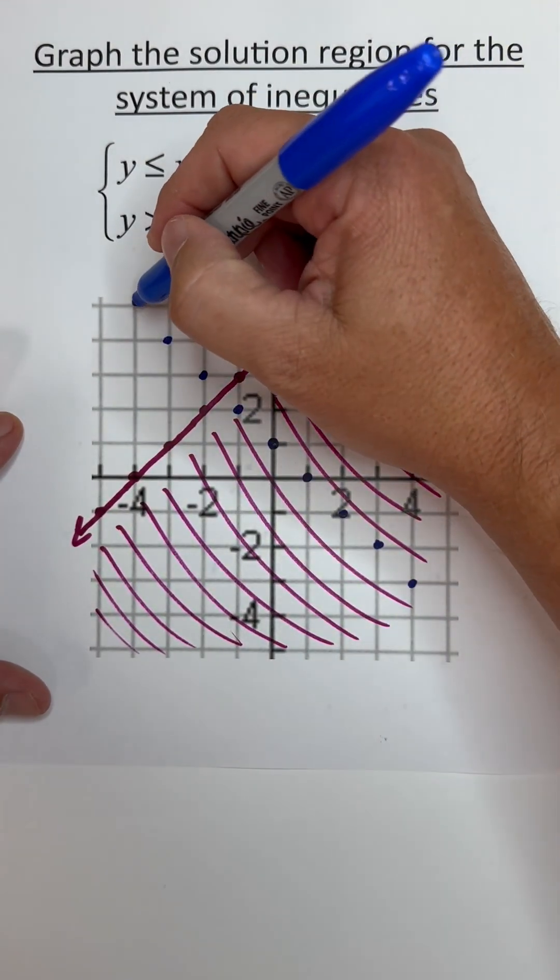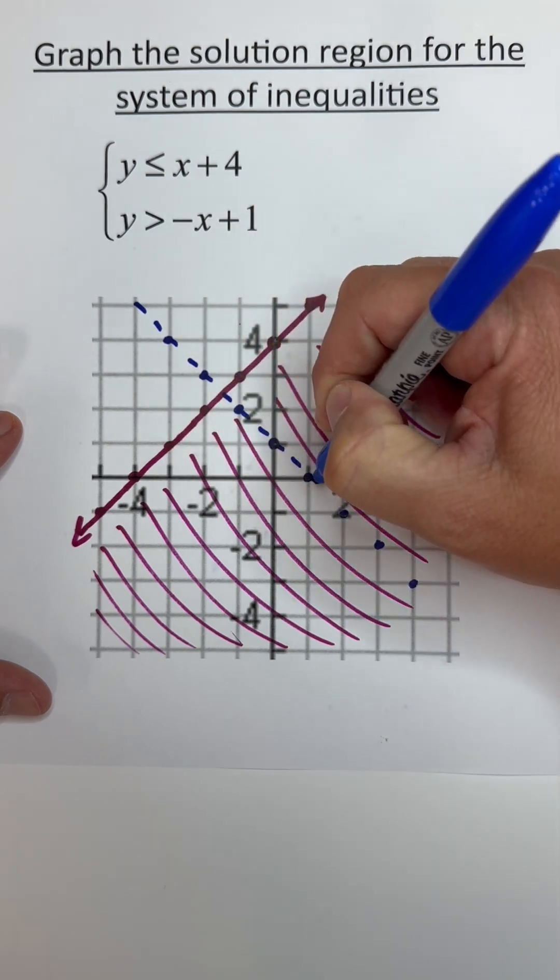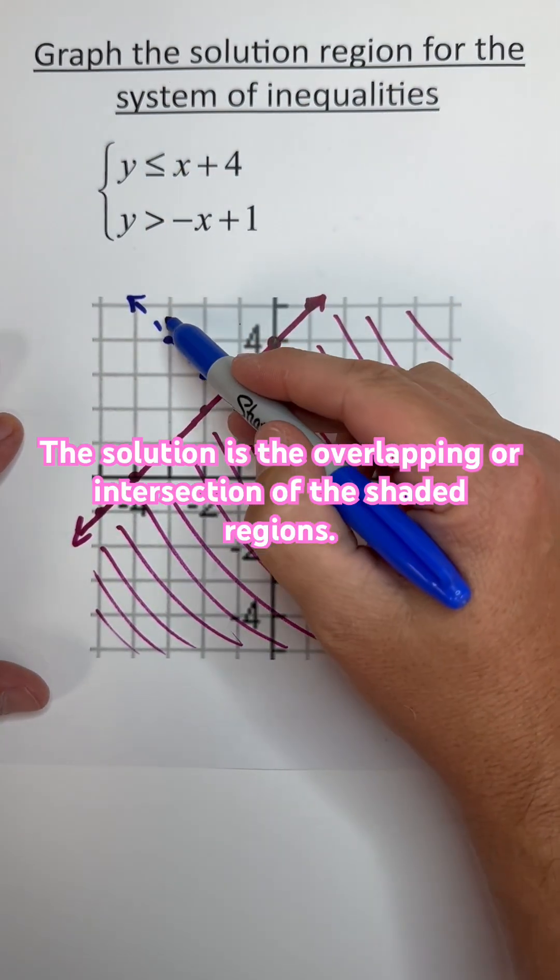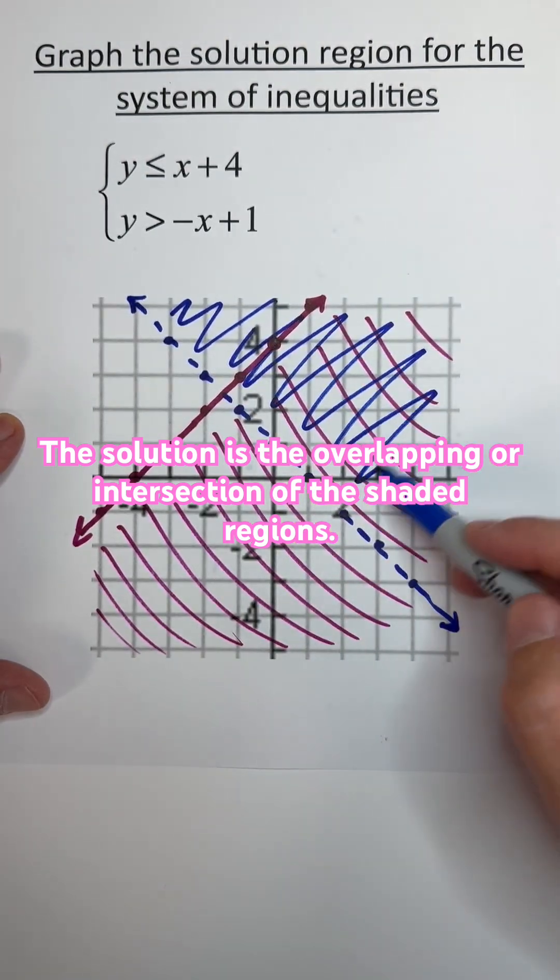It needs to be a dashed line. And it's greater than, so we want to shade everywhere above this line.